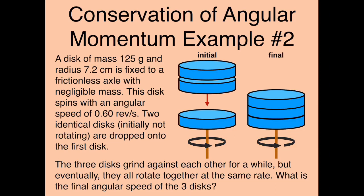Hi everybody, welcome back. Today we're going to be finishing up our chapter 11 lecture on angular momentum. Where we left off last time was the discussion of conservation of angular momentum — the idea that if you have a system with no external torques acting on it, the total angular momentum of that system is going to be conserved. It's going to stay the same. Let's start off with another example of that.